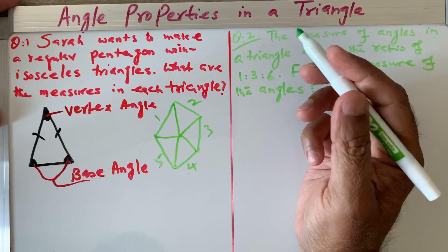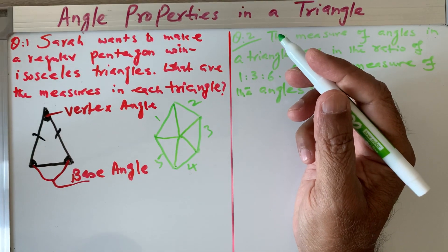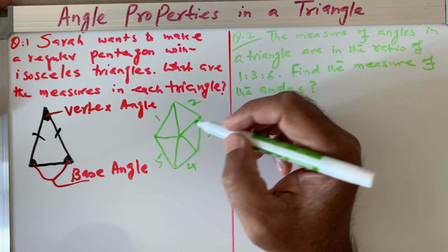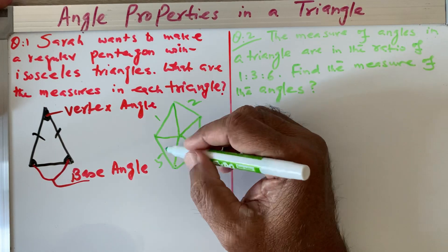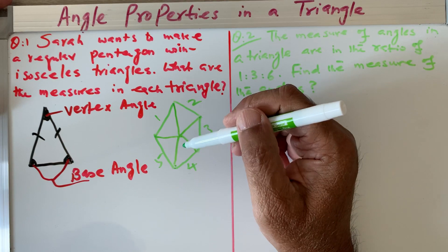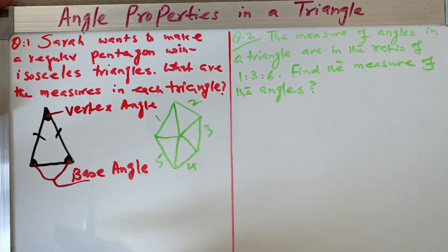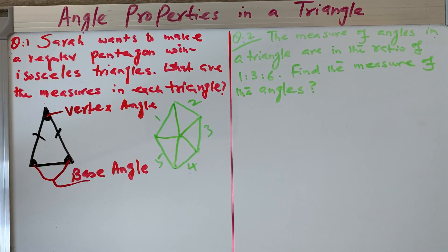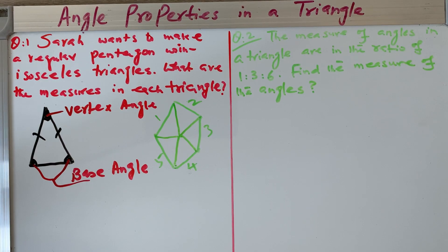You can draw in any shape, but it's a rough sketch for a pentagon which has got one, two, three, four, five triangles. Sarah wants these triangles to be isosceles, meaning two sides are equal. And now she wants to find out the angles in each triangle.